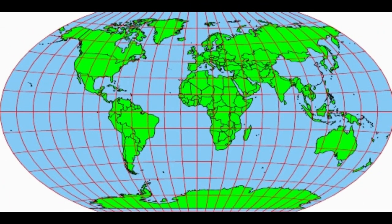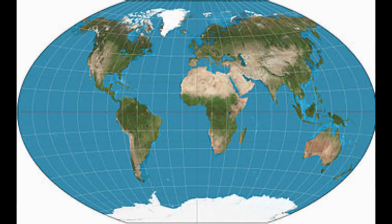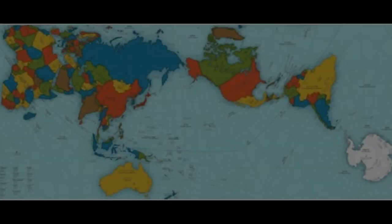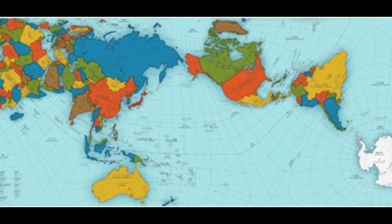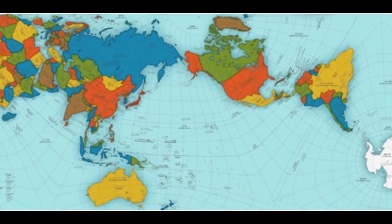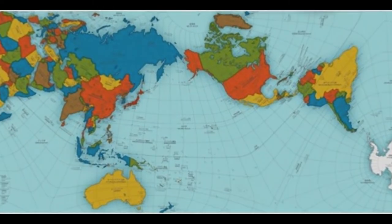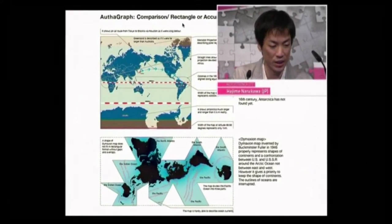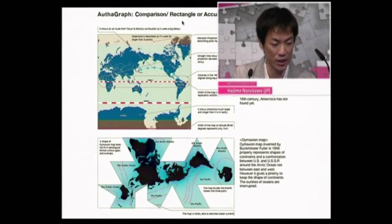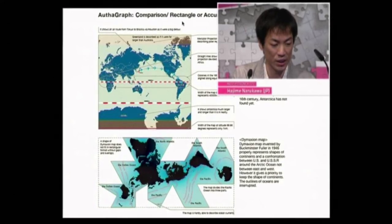Nowadays, the most popular projection is AuthaGraph. This is hands down the most accurate map projection in existence. In fact, AuthaGraph world map is proportionally perfect. It magically folds into a three-dimensional globe. Japanese architect Hajime Narukawa invented this map projection in 1999 by equally dividing a spherical surface into 96 triangles.